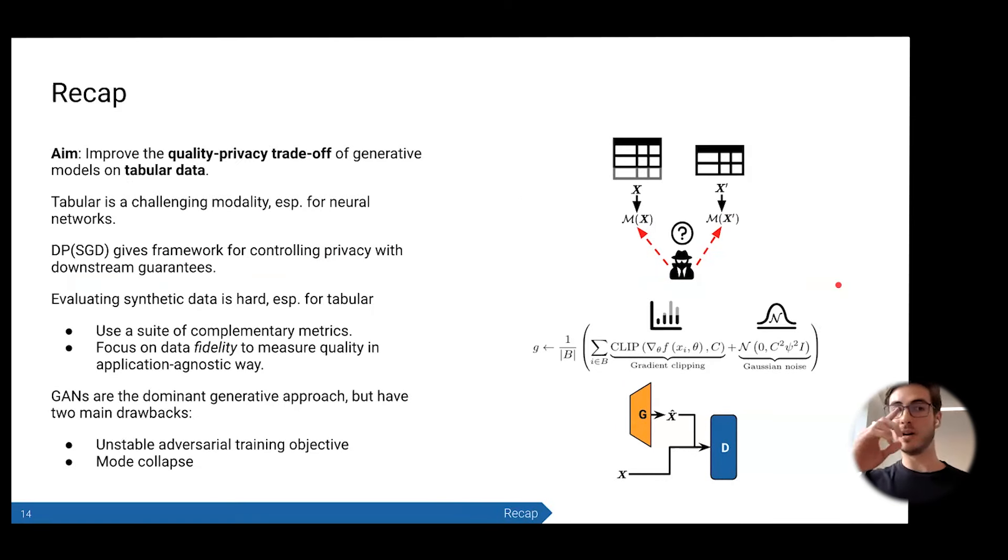A recap of what we've covered so far. The aim is to improve this quality-privacy tradeoff of generative models on tabular data. We've seen that tabular data is a really challenging modality, especially for neural networks and especially when you're trying to generate. We have these tools of differential privacy and the gradient descent version of that that gives us a framework for controlling the privacy with downstream guarantees. We've also seen that evaluating synthetic data is hard, especially with tabular. So we use a suite of complementary metrics and we focus on fidelity to measure quality in an application-agnostic way that is also going to correlate pretty highly with utility. We've seen also that GANs are the dominant generative approach, but they have two main drawbacks: unstable adversarial training and the mode collapse issue.